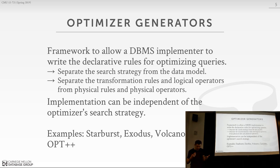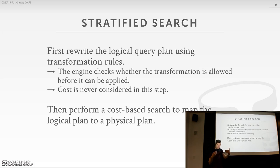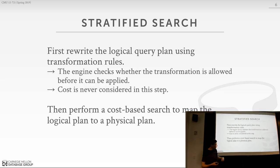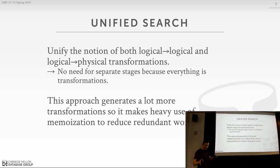There are two classes of algorithms we could use: stratified versus unified. In stratified, you have a rewrite phase doing logical-to-logical transformations first, then a separate cost-based search to convert logical to physical — for example, going from 'join table A and B' to 'join table A and B with a hash join.' This second stage is primarily spent on join ordering. In unified search, all transformation rules are in a single search model with defined priorities, but no separate stages.